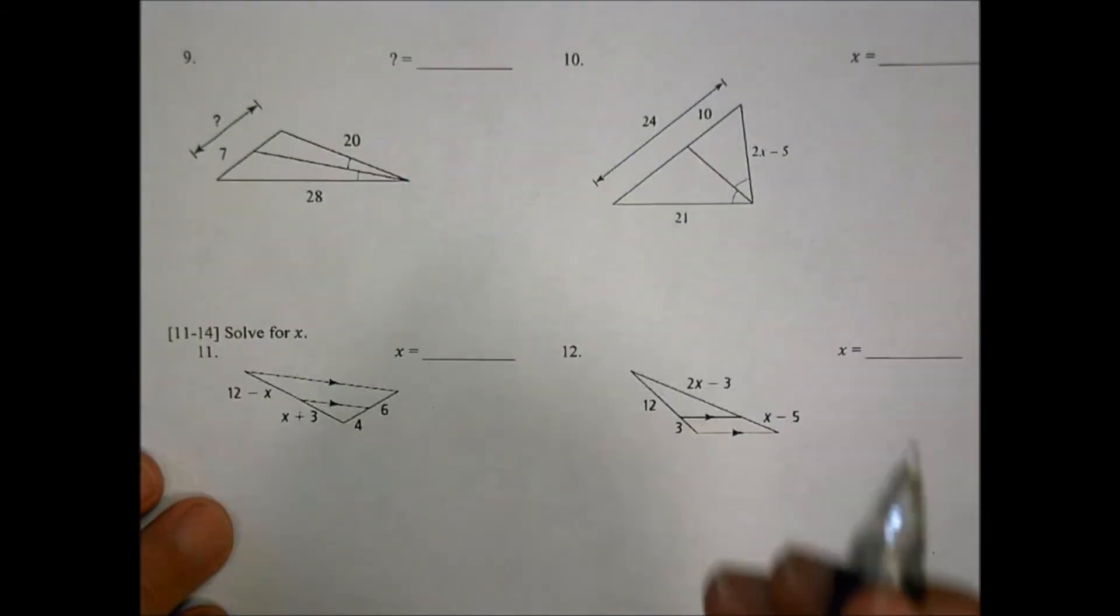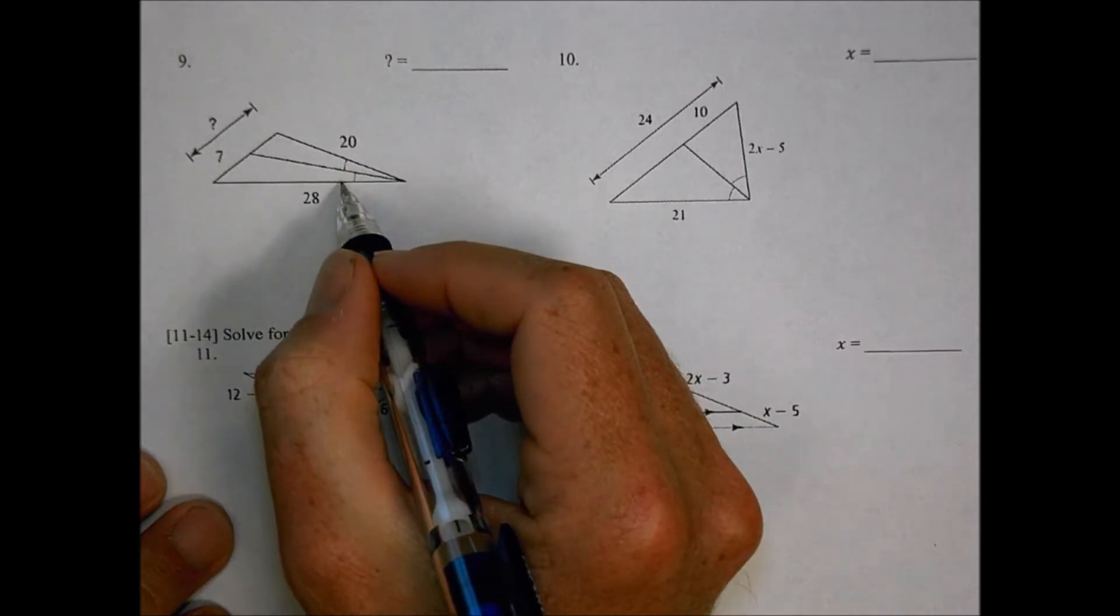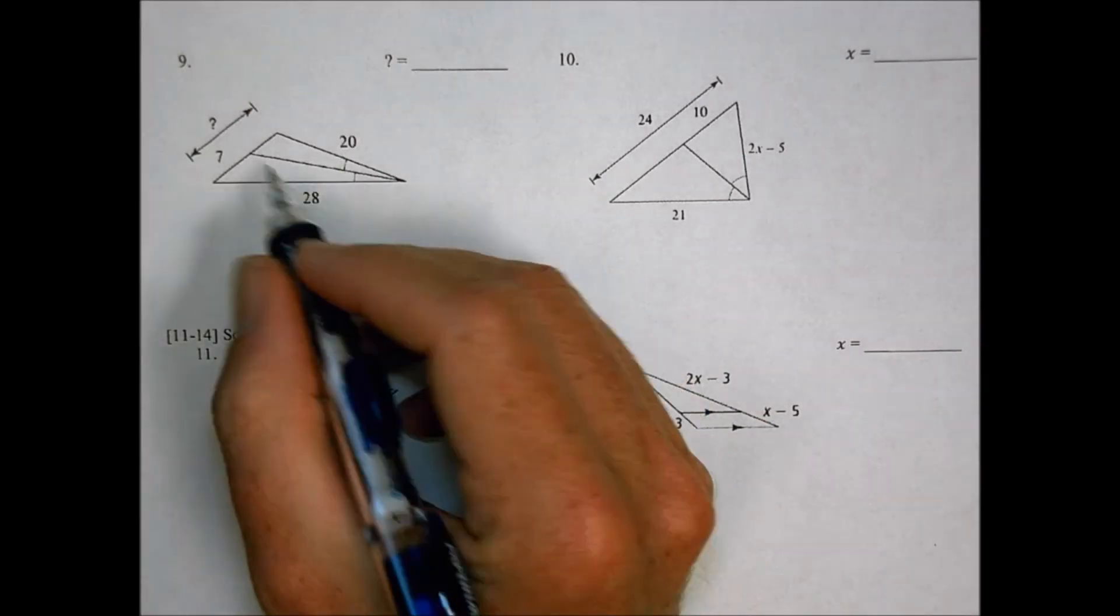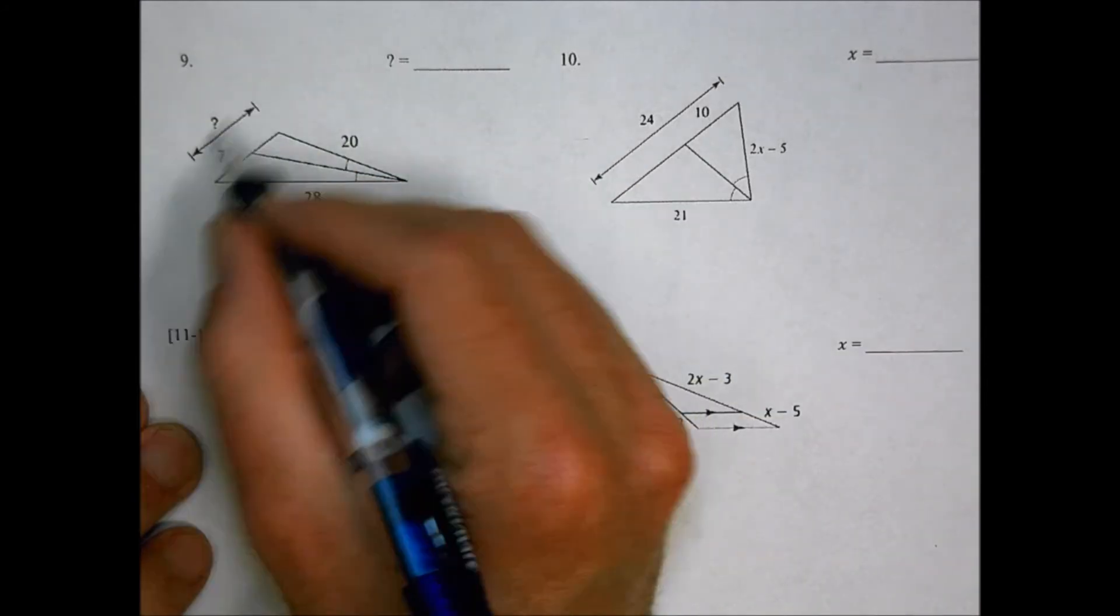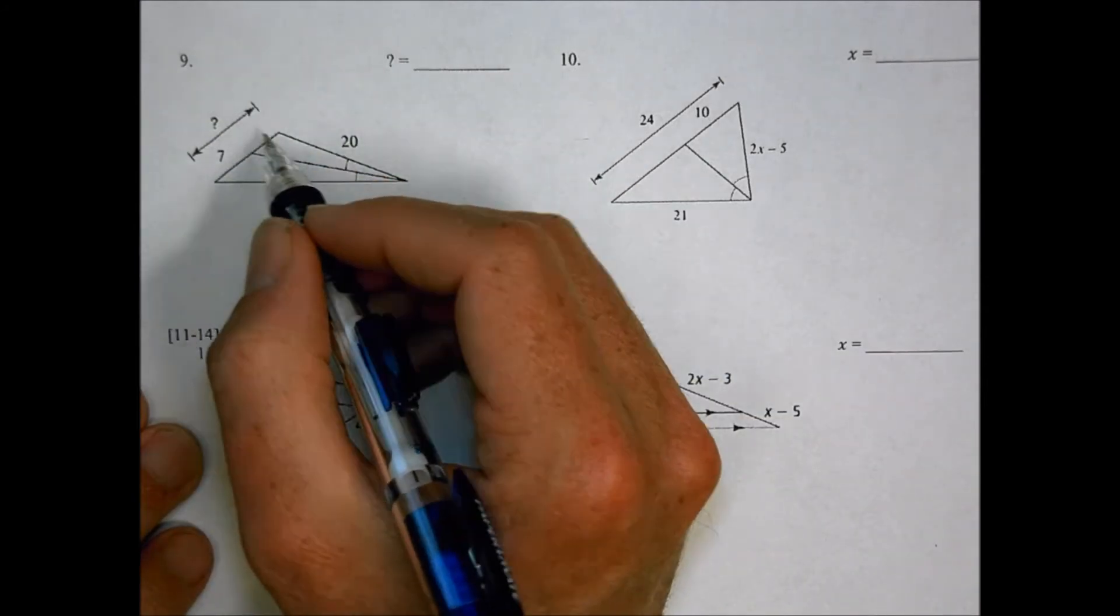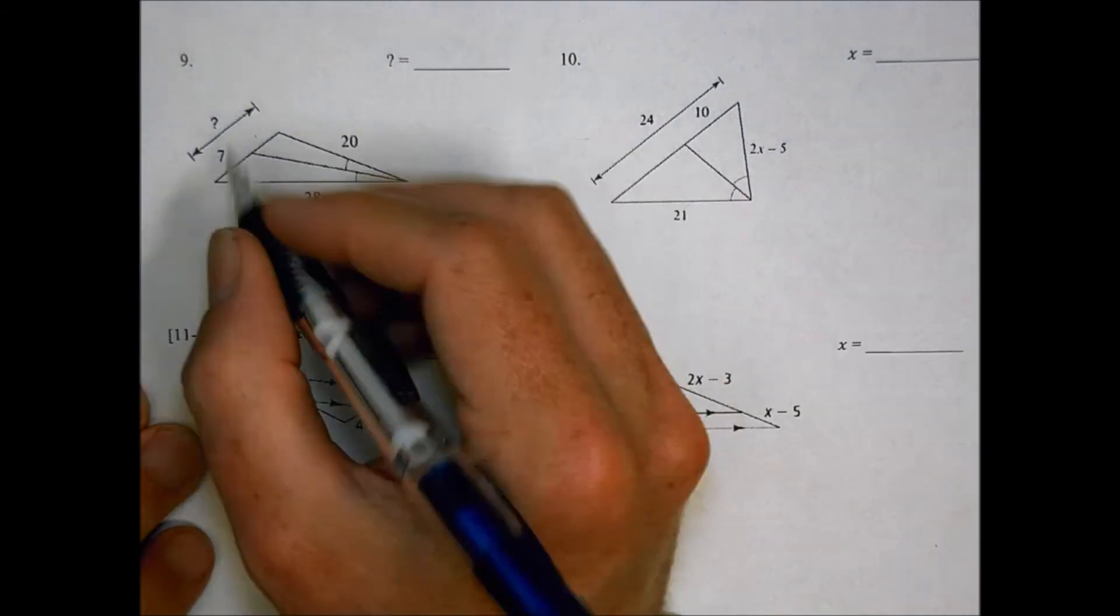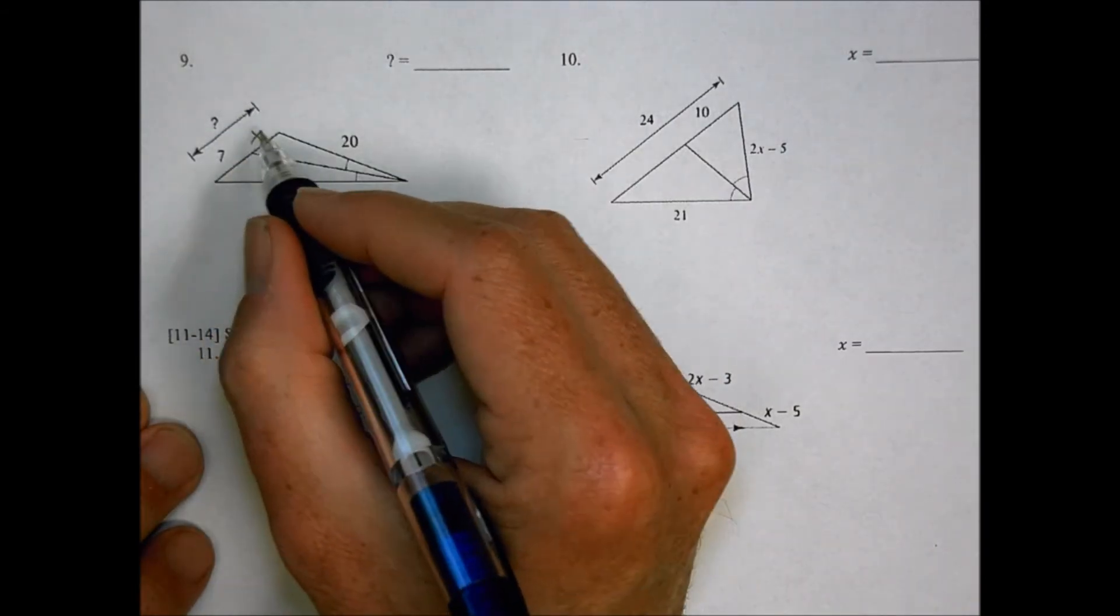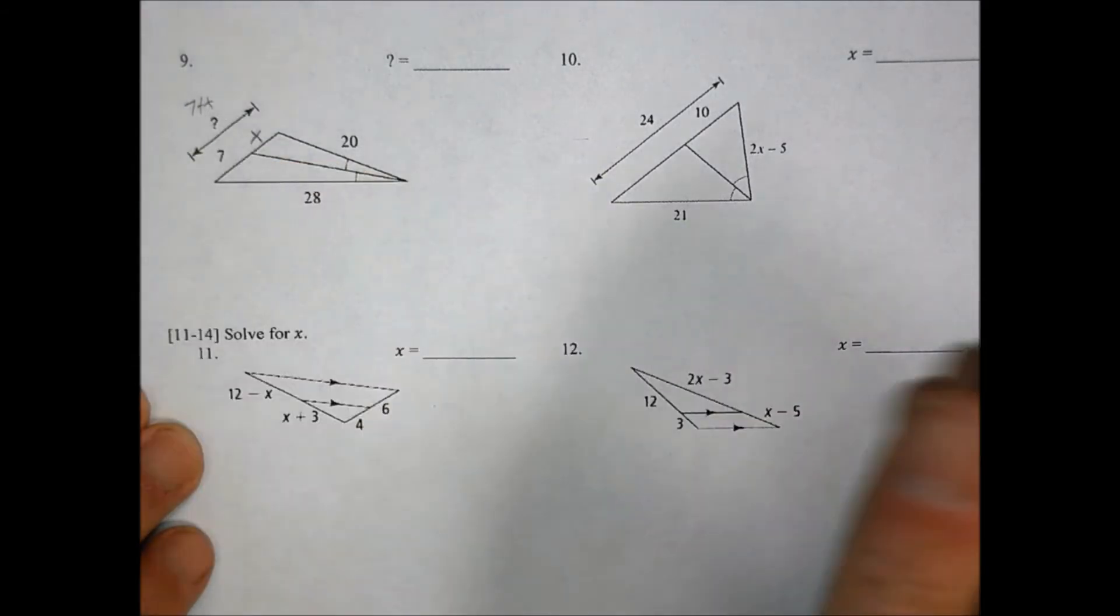Looking over to the back side, number 9. So number 9, we have similar angles here, and we have a 20 and a 28, and we have 7, and I don't know what that is. So we don't know the whole thing, but we need to find out that one first of all. And that's going to get added to the 7, so there's a couple steps here.